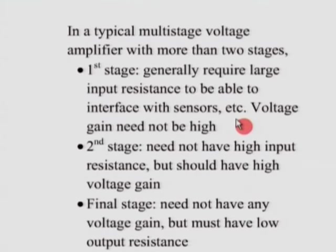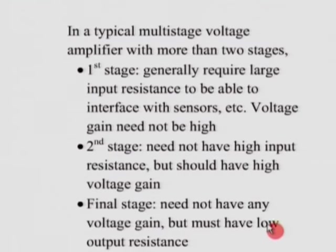When we talk about the second stage in almost all multi-stage amplifiers, there is no requirement for high input resistance, but that stage must provide very high voltage gain. The main requirement for the second stage is very high gain, not high input resistance. For the final stage, the main purpose is to interface with the output load. Therefore, it need not have any voltage gain — it can be unity gain — but it must have low output resistance.